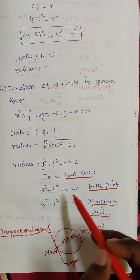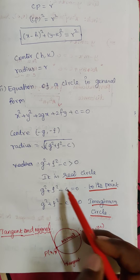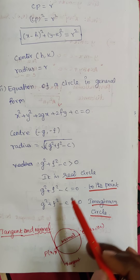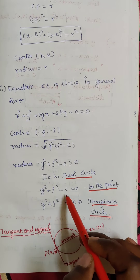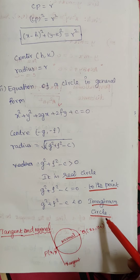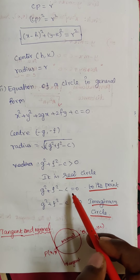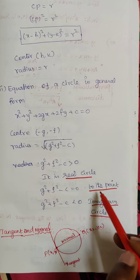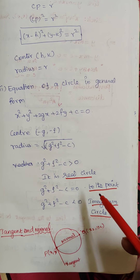These three cases are very important. If g squared plus f squared minus c is greater than 0, it is a real circle. If less than 0, it is an imaginary circle. If equal to 0, it is called a point circle.